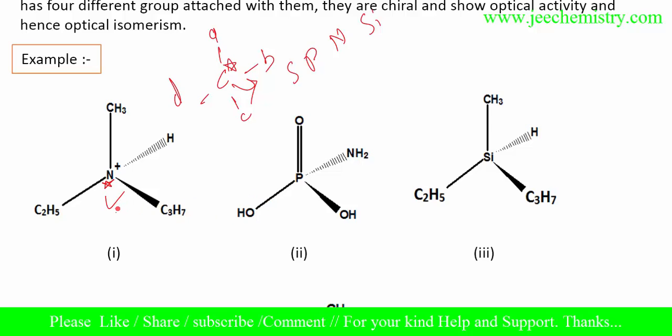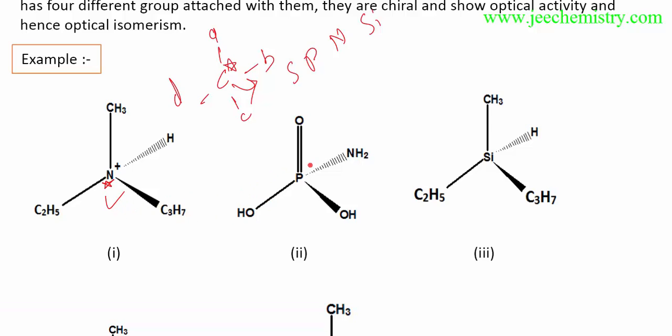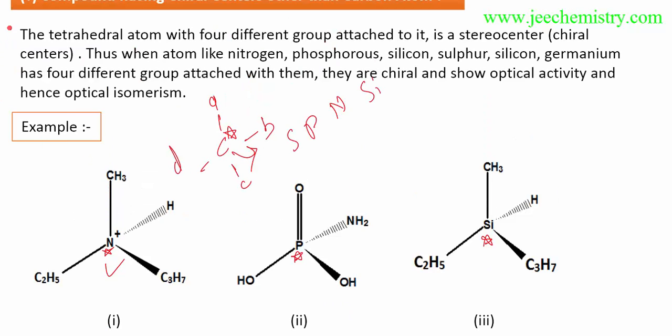This carbon is chiral. You can denote a star to represent this chiral center. This nitrogen atom is chiral, also having four different groups. This silicon also has four different groups, so it is also chiral.